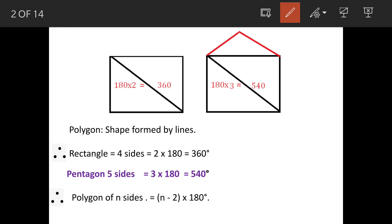So that means pentagon has got five sides but the angles are 3 times 180 equals 540. So four sides will have 2 times 180, five sides 3 times 180. So if you have n sides, that means it will be (n minus 2) times 180.